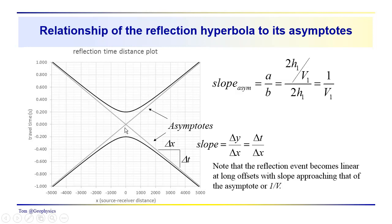The slope of the asymptote — Δt/Δx — equals a/b, which is (2h/V1) / 2h = 1/V1, giving units of reciprocal velocity. Note that the reflection event becomes linear at longer offsets and converges on the asymptote, starting to look like a line with a slope of 1/V1.